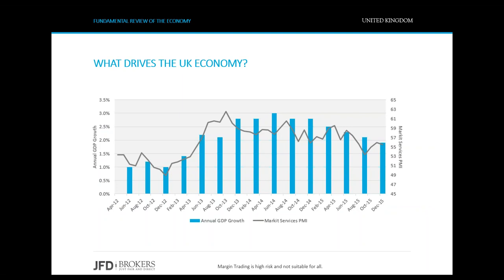We start from the first chapter that will cover the fundamental review of the UK economy. The first indicator to look at is the headline GDP, or gross domestic product, and find out what drives it. Here, I plot the GDP growth and the market services purchasing managers index, which are represented by the blue columns and the grey line respectively. At a glance, the two indicators are clearly correlated, which is fully understandable, as the services sector accounts for more than 75% of the total GDP.